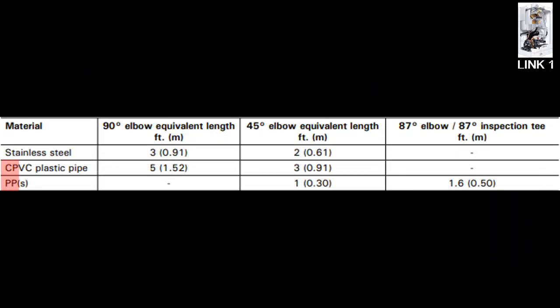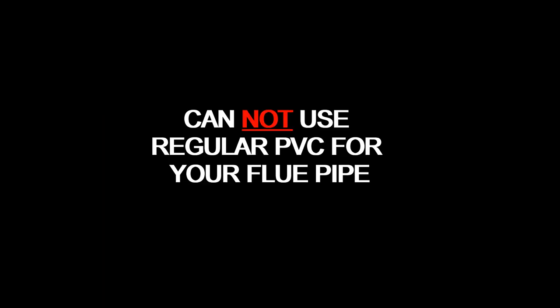If you are planning on using CPVC or PPS for your flue pipe, you must ensure that it is ULC S636 or UL 1738. Otherwise, it's not rated for the temperature of the flue gas. You cannot use regular PVC for your flue pipe.